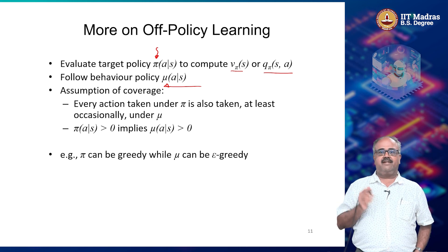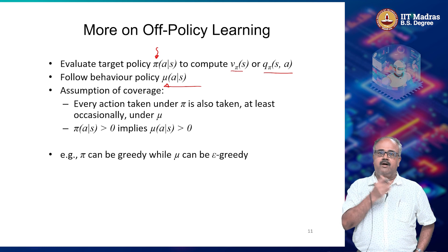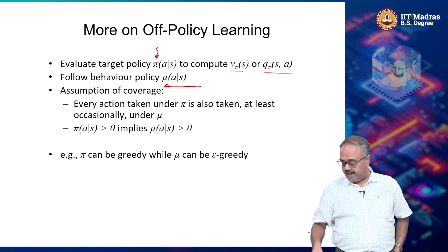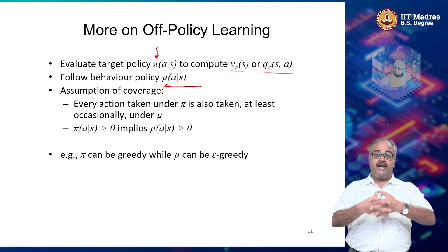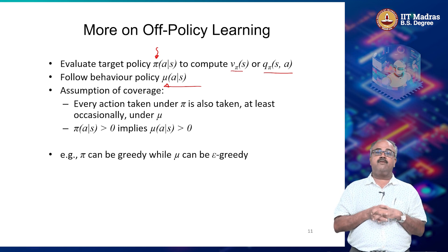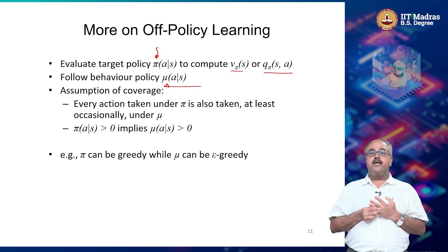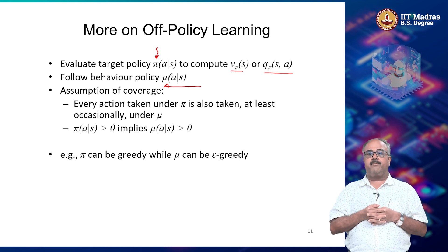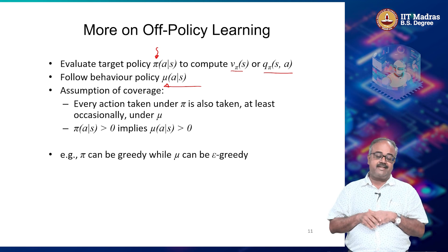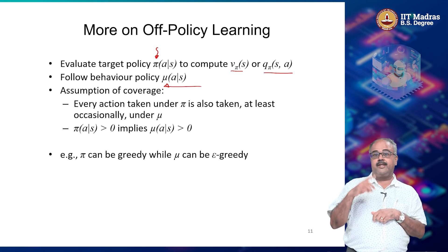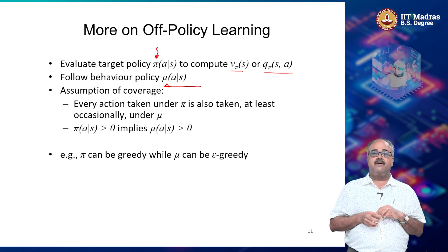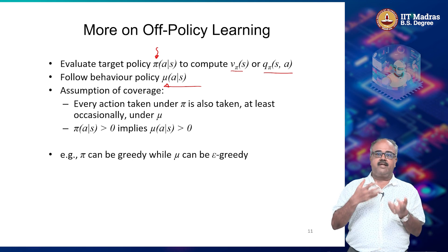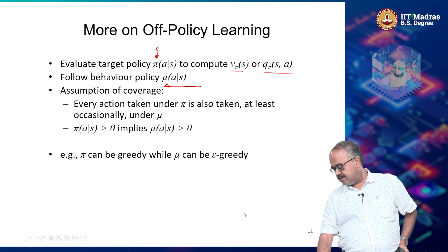I will talk more about why people started thinking about off-policy learning when we discuss hierarchies later. Off-policy learning is now very well established, particularly because when applying reinforcement learning to real systems, you might have a specific policy the company has already deployed. You will not be allowed to use your own policy because it has not been evaluated. You have to look at samples drawn by the existing policy and use that to evaluate the policy you are proposing.